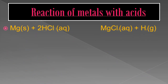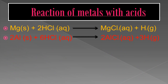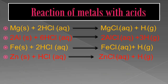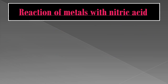The specific reactions with dilute HCl are: Mg + 2HCl → MgCl2 + H2; 2Al + 6HCl → 2AlCl3 + 3H2; Fe + 2HCl → FeCl2 + H2; and Zn + 2HCl → ZnCl2 + H2. In all these reactions, hydrogen gas is liberated and chloride salts of the respective metals are formed.